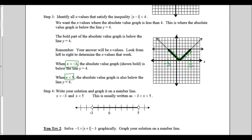Now we need to put that on a number line. If we compress the graph down, it would be all the parts between negative 3 and 5. Since this inequality didn't have an equal to, we use open circles when plotting our points. I can write the solution as x is greater than negative 3 and x is less than 5, or as the compound inequality: negative 3 is less than x is less than 5.